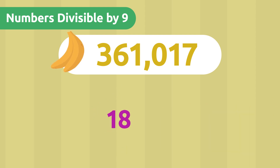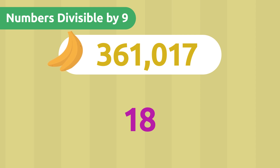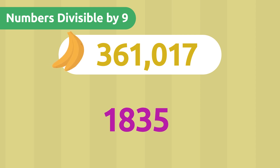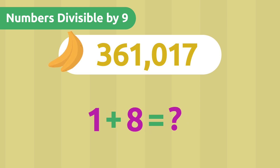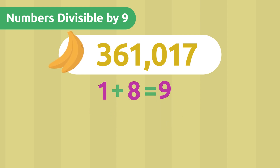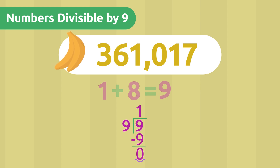But, as with the divisibility rule of 3, the result of the sum of the number we want to check may be too large. What do you think we could do then? Exactly! We are going to do the same as before, and add the digits again. The previous sum gave us 18, so 1 plus 8 is 9. A number is always divisible by itself, so we have already solved the banana problem.